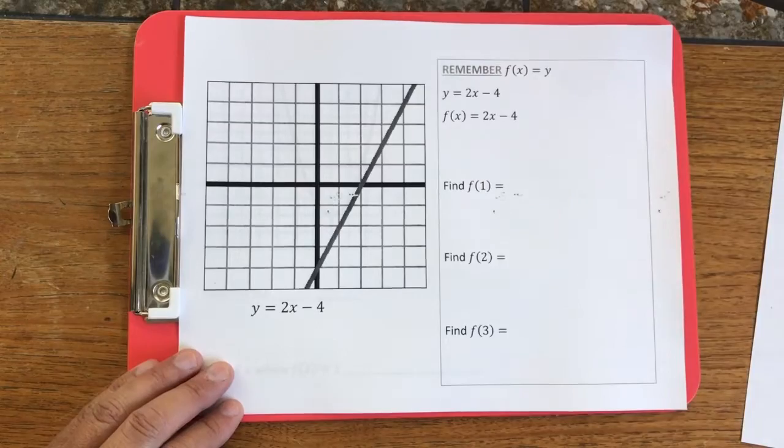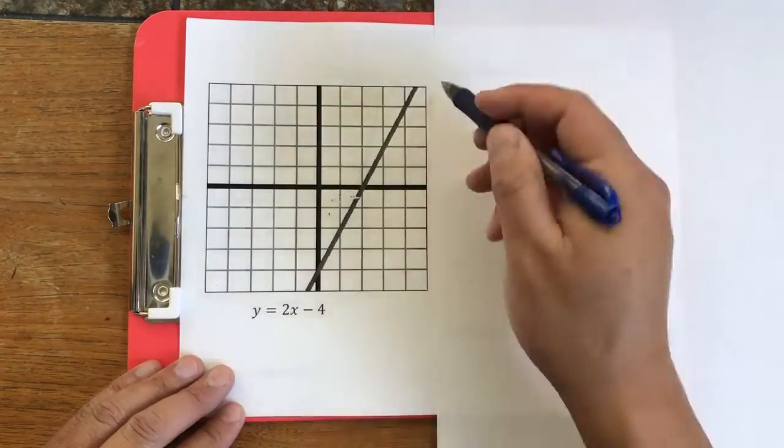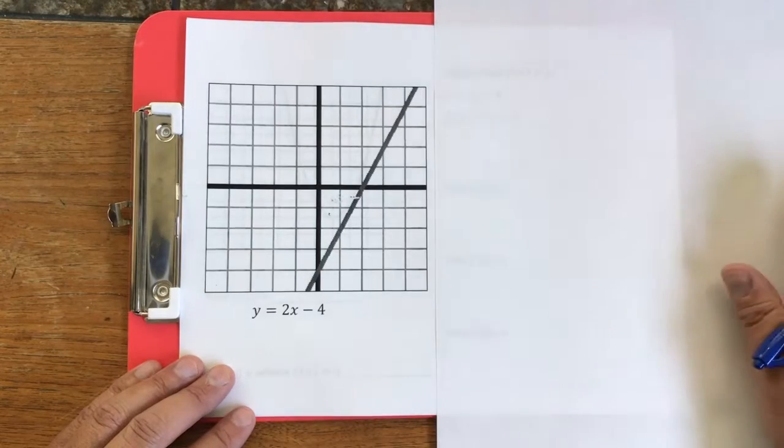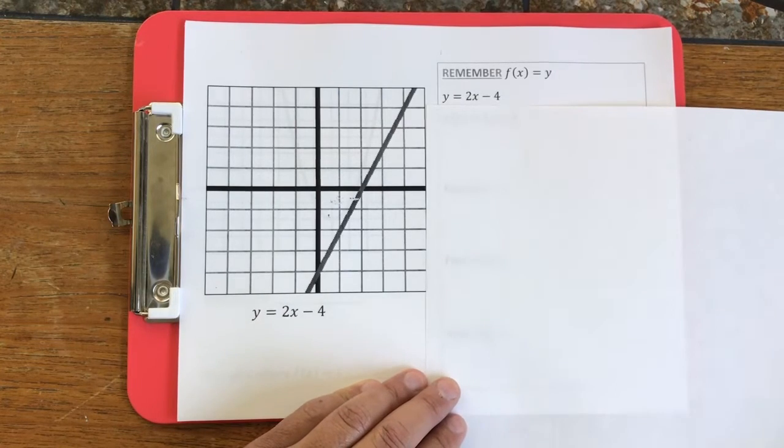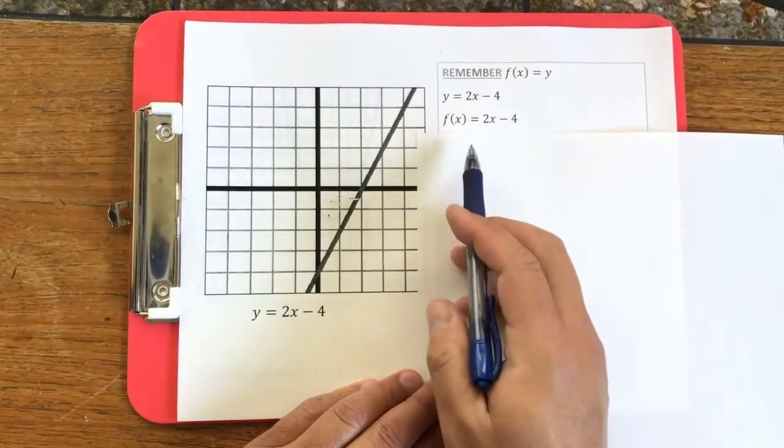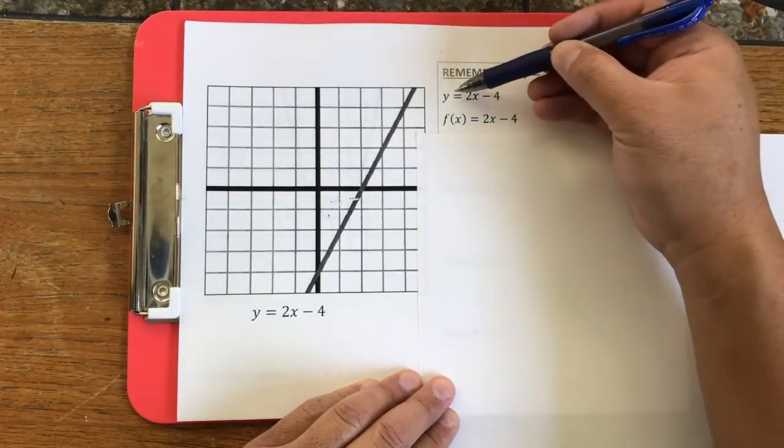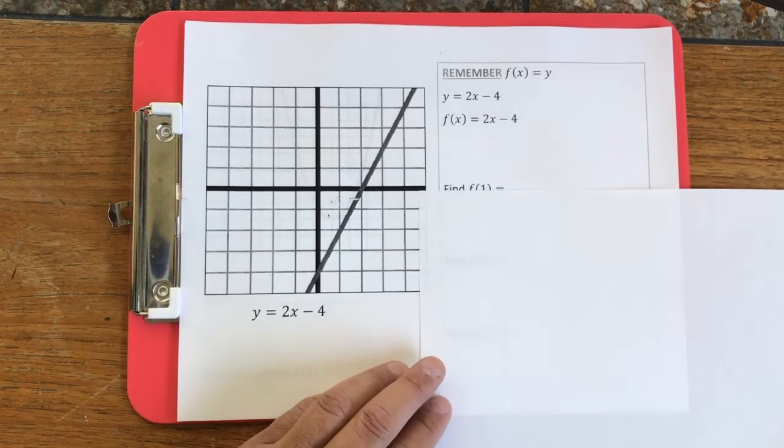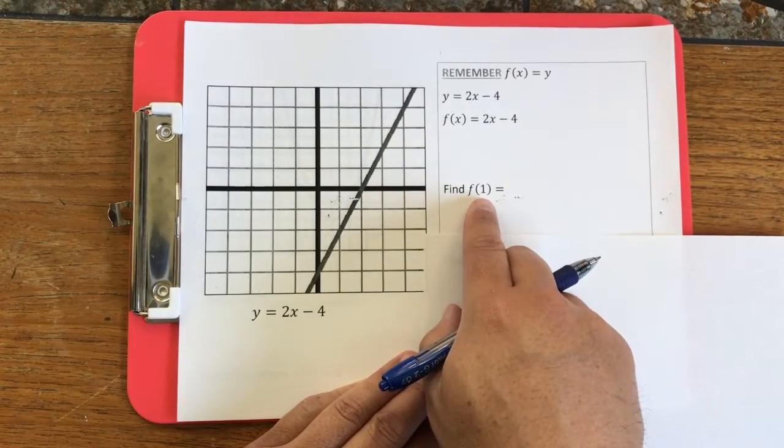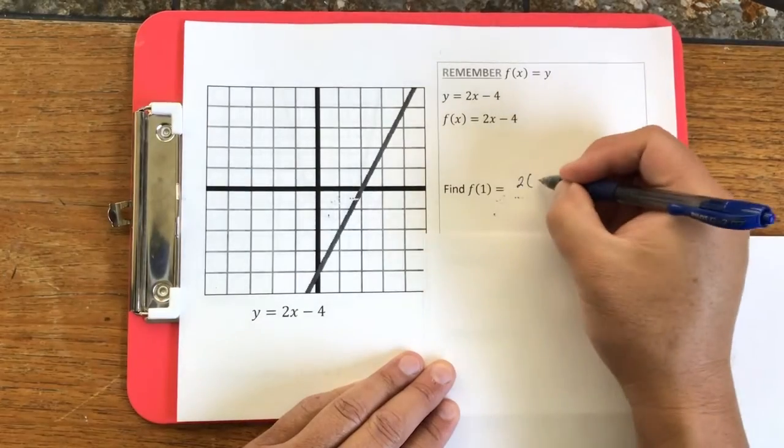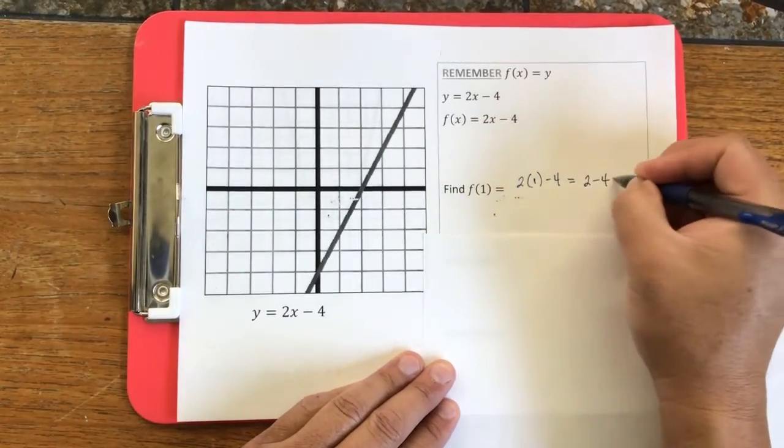Now suppose I ask you to graph a line. So this is the line y equals 2x minus 4. Now let's use this concept that f of x is equal to y. So I can change the y with f of x. So now I have f of x is equal to 2x minus 4. So we can write a linear equation two different ways with either y equals or f of x equals. Now let's see how this notation is really helpful.